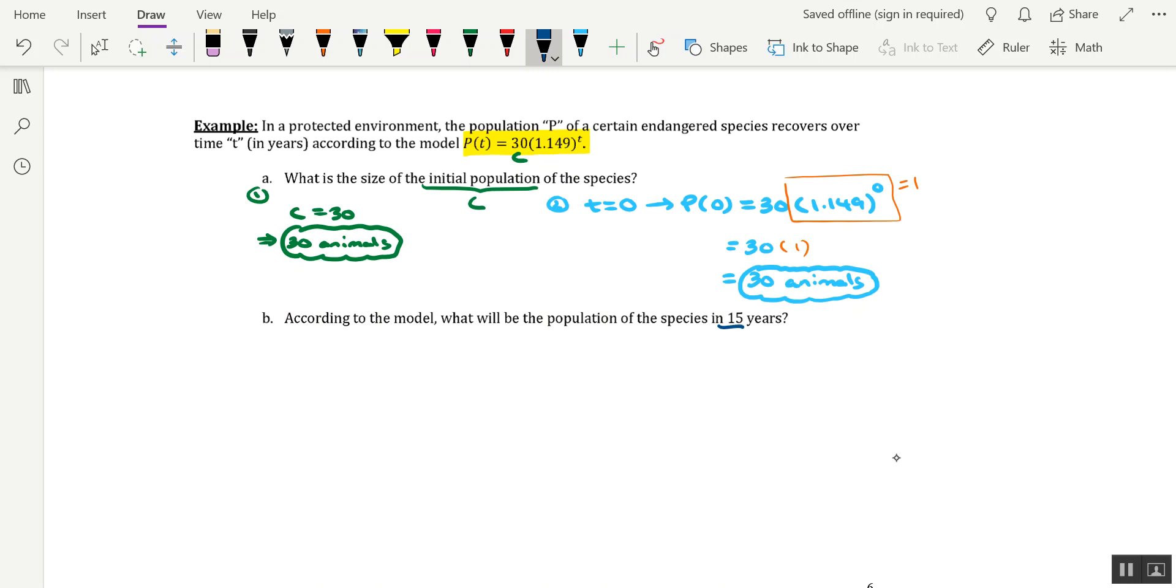All right, so this 15 is actually a particular value of T, and all we'll have to do is take that value of T, plug it into our exponential function. So we're going to do P of 15, and we'll do 30 times 1.149, and raise that to a power of 15.